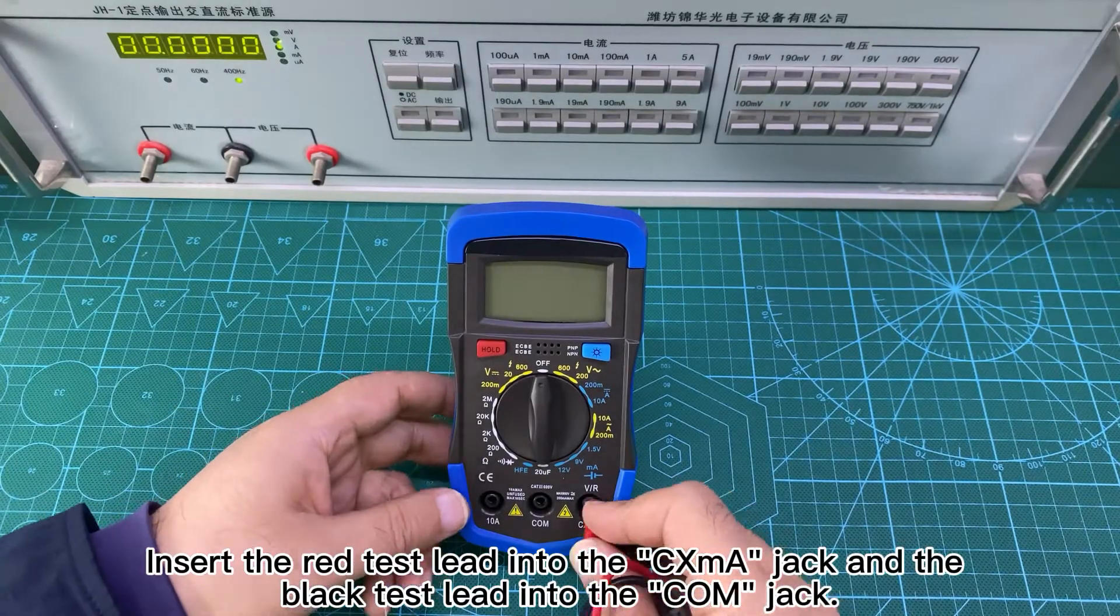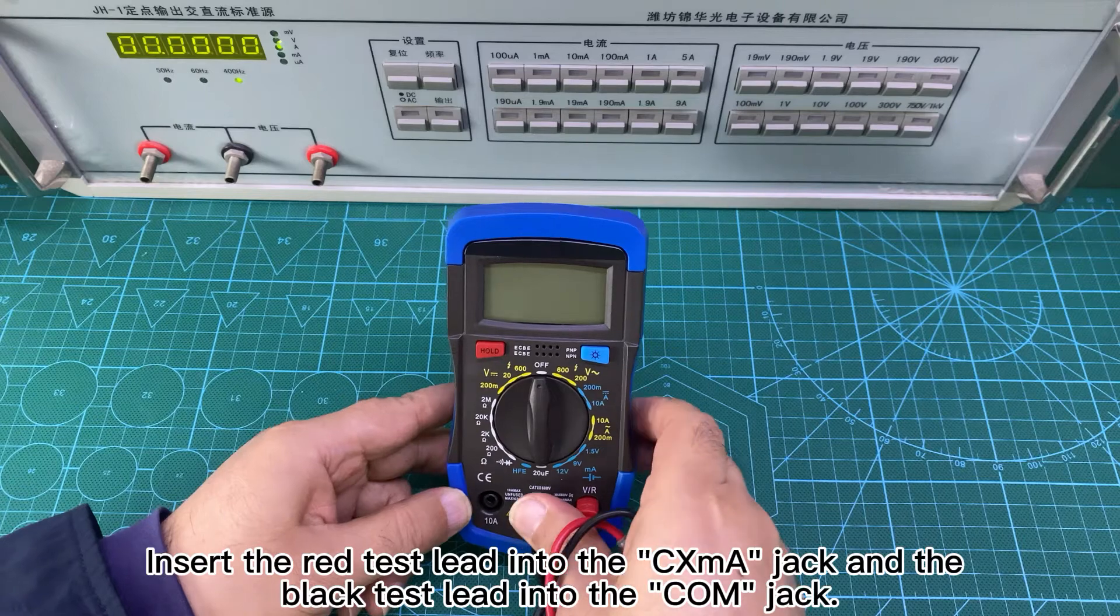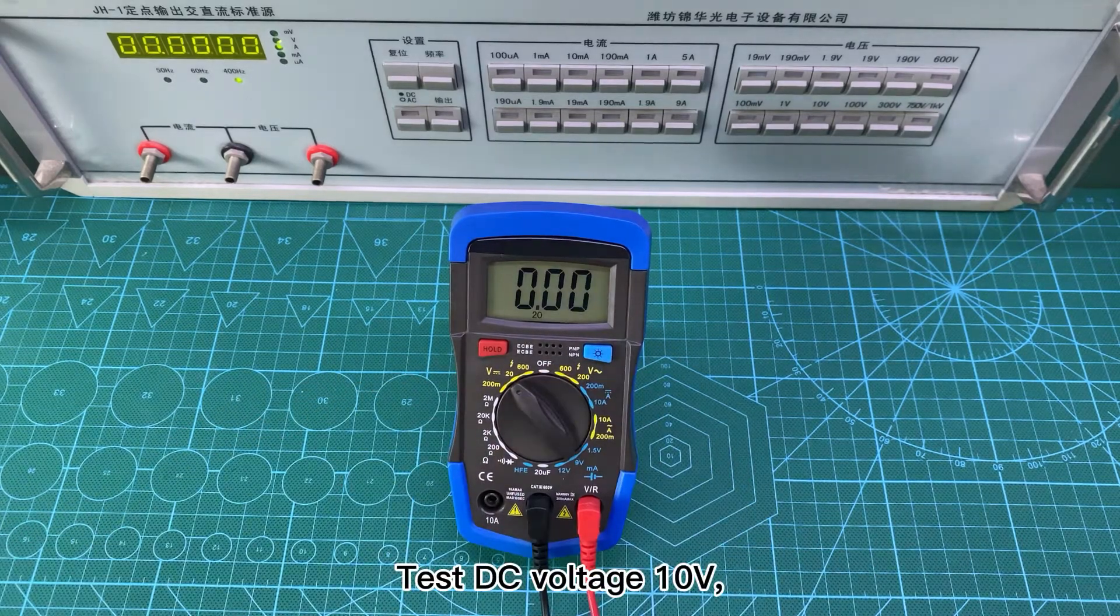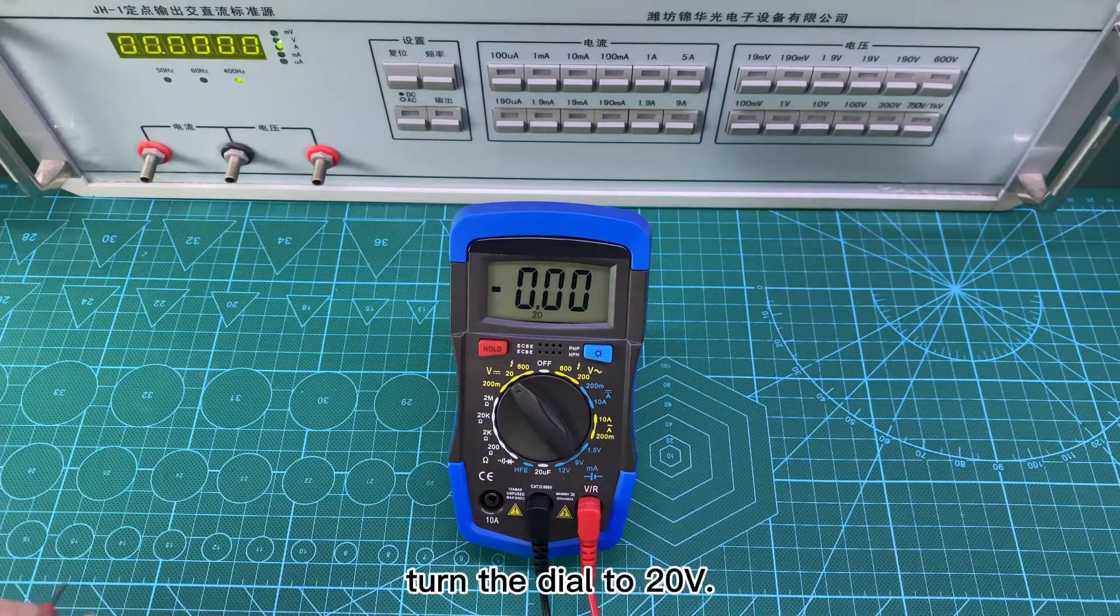Insert the red test lead into the SCSMA jack and the black test lead into the COM jack. Test DC voltage 10V, turn the dial to 20V.